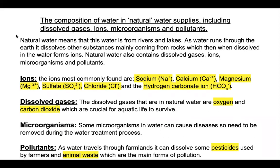So, composition of water in natural water supplies. Natural water, we've got to break it down — essentially it's from rivers and lakes, a natural source of water. As the water runs through the earth, it dissolves other substances, mainly coming from rocks, and when dissolved in water, forms ions. You need to know about what ions are actually found in natural water.